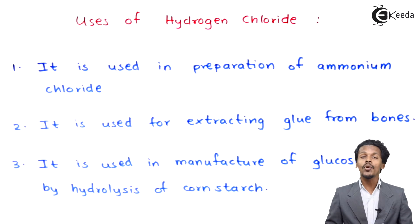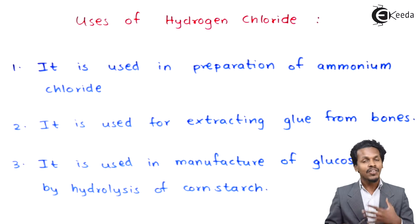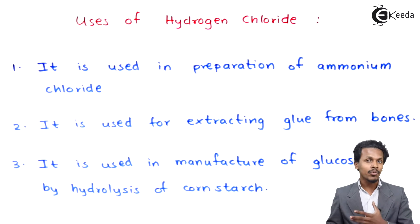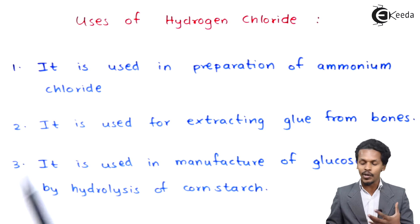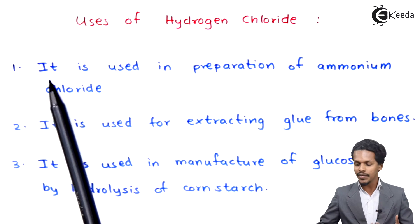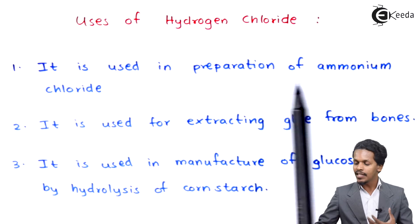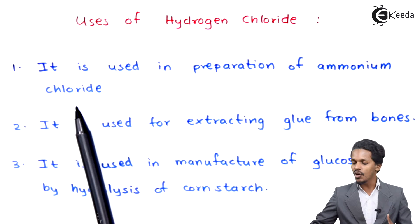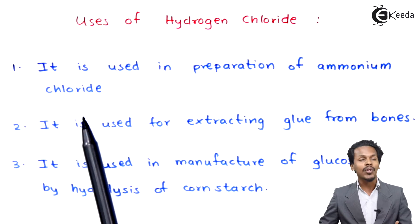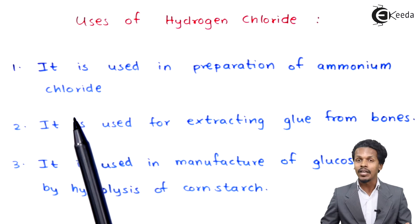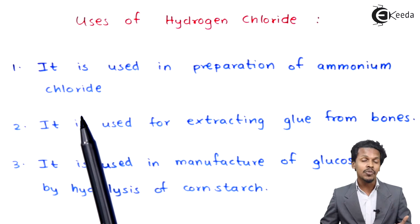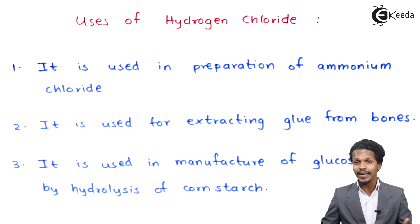So friends, talking about the uses of HCl — HCl has wide applications, and that's the reason I am going to talk about certain points, starting with the first one. It is used in the preparation of ammonium chloride, and along with that it is also used to prepare chlorine gas.